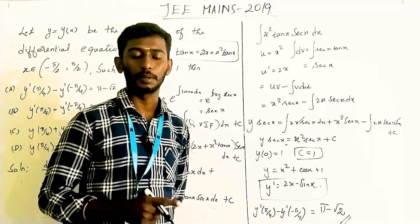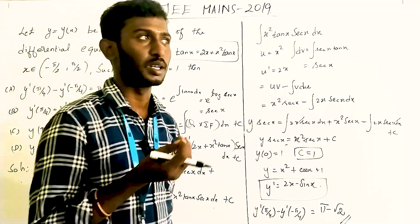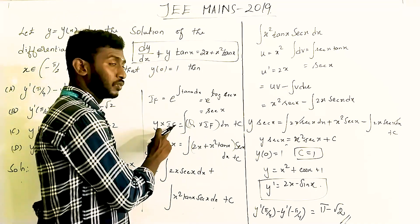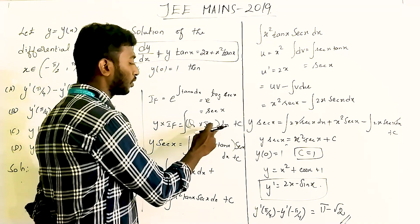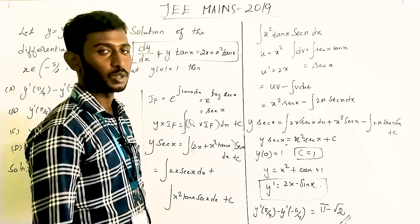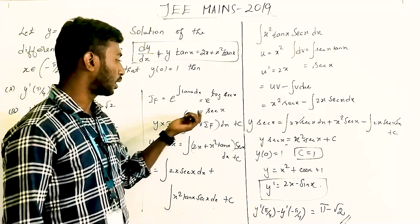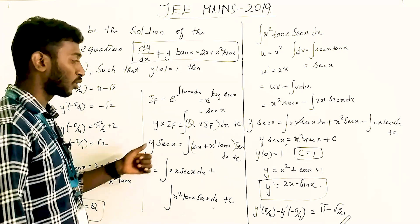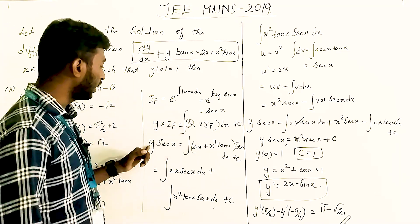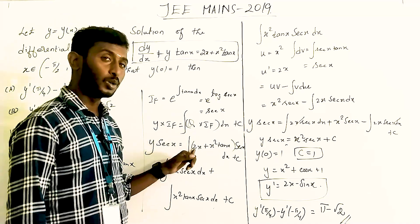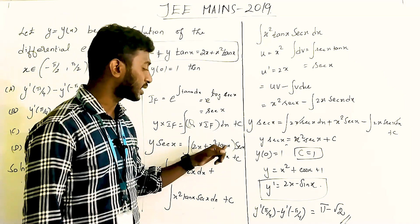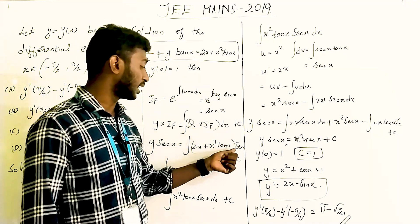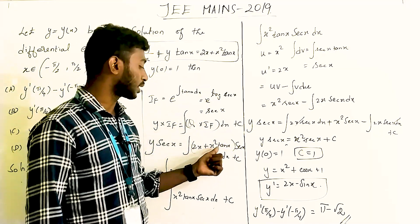Since IF = sec x, the solution of the differential equation is y·(IF) = ∫q·(IF) dx + C. Substituting, y·sec x = ∫(2x + x²·tan x)·sec x dx + C, which we split as ∫2x·sec x dx + ∫x²·tan x·sec x dx.